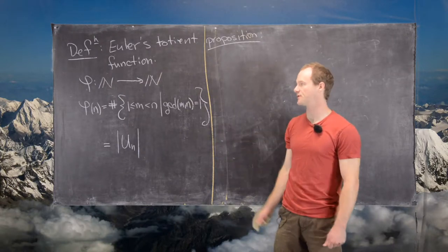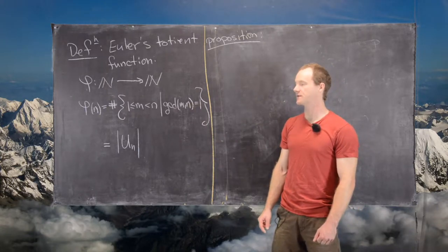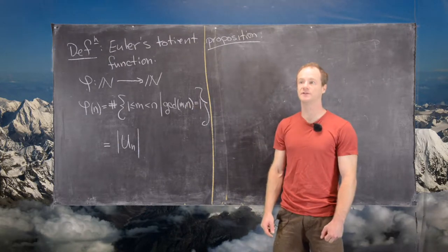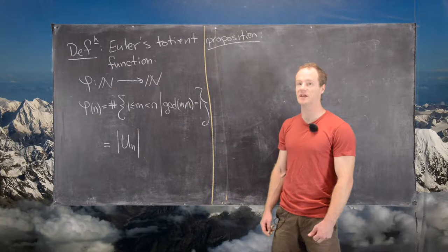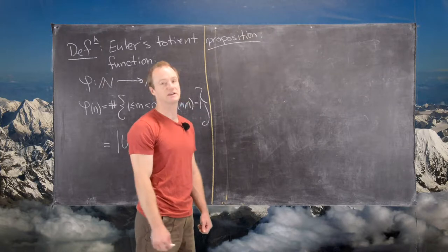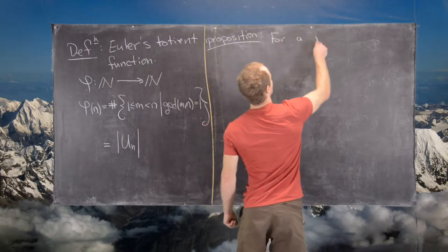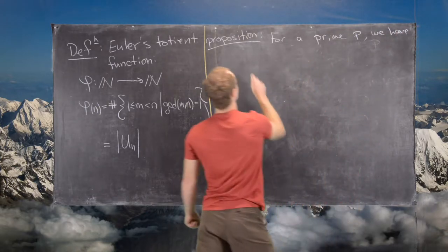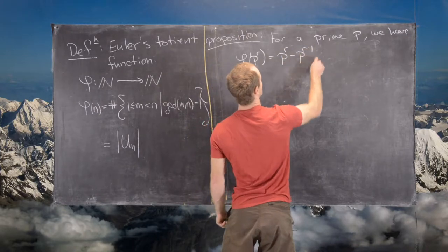In a previous video we defined Euler's totient function — the number of positive integers smaller than n that are relatively prime to n. That's how we define φ(n). We also proved a formula for φ of a prime. In this video we want to look at a formula for φ of a power of a prime. The proposition is: for a prime p, φ(p^r) = p^r − p^(r−1).